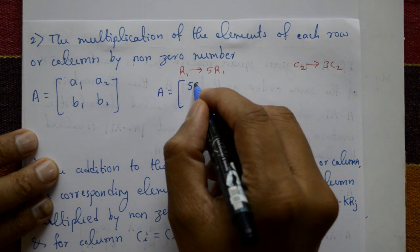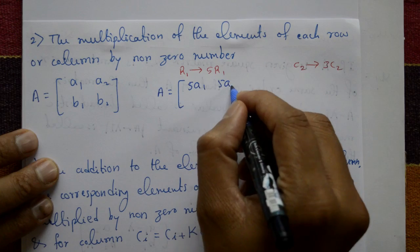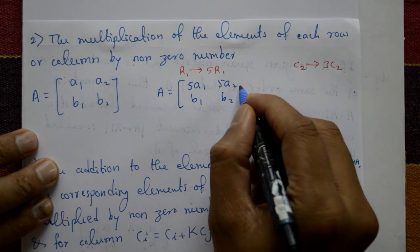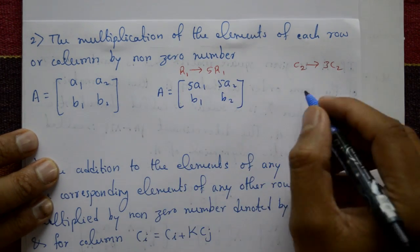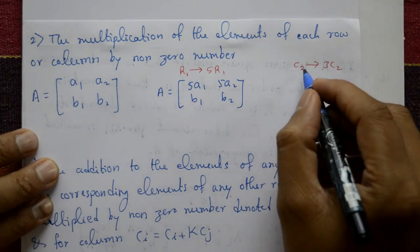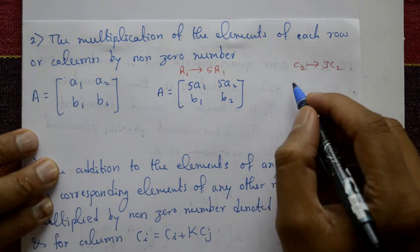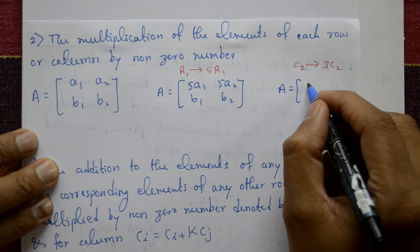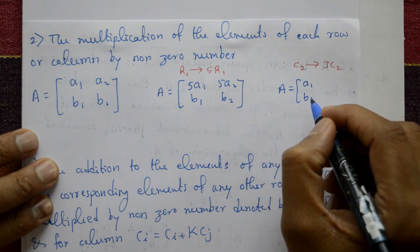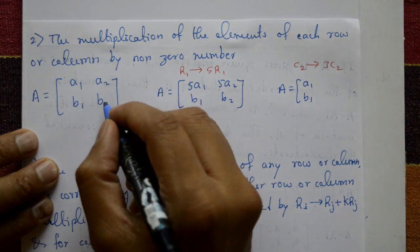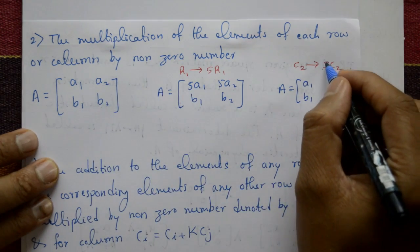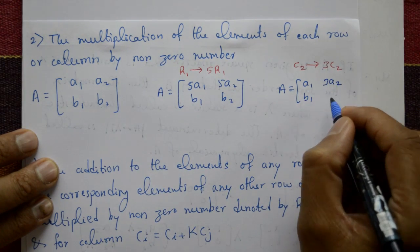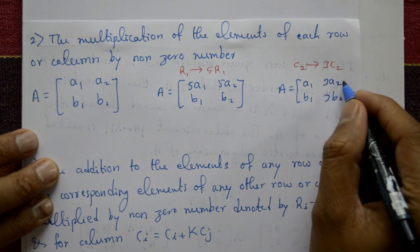When r1 is multiplied by 5, the matrix becomes: first row is 5a1, 5a2 and second row remains as it is, b1, b2. For column operation, c2 equal to 3 into c2 means the second column becomes 3a2 and 3b2, while the first column a1, b1 remains unchanged.